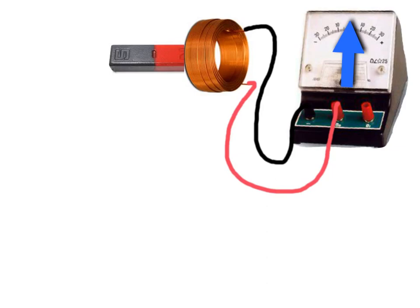And we say that the magnetic flux, the magnetic field through the coil is changing, and it's that change that causes this galvanometer to be moving either one way or the other.